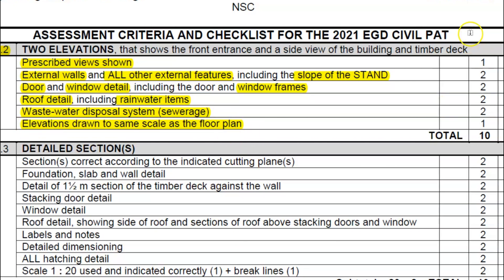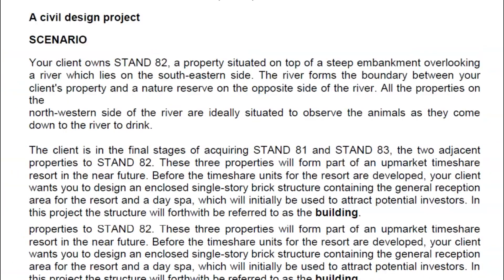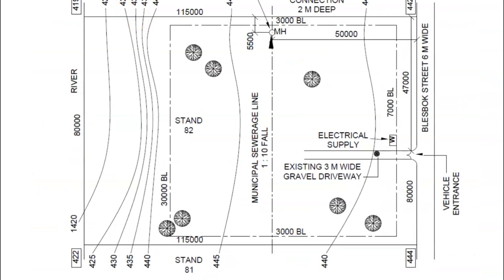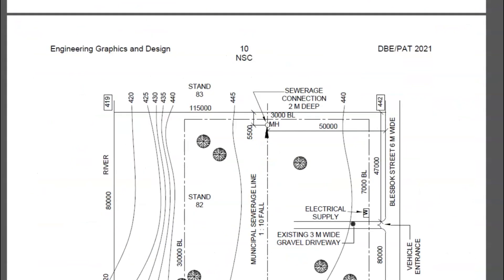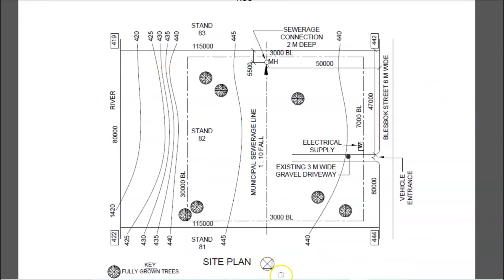Make sure these elevations are drawn to the same scale as your floor plan and you'll get 10 out of 10. Let's jump back to the actual PAD document and go to the site plan — there we have it. A couple of important things: first of all the northern arrow. If you enter from Blessbox Street, that's the view they want as your main elevation — that's going to be your northwest elevation.